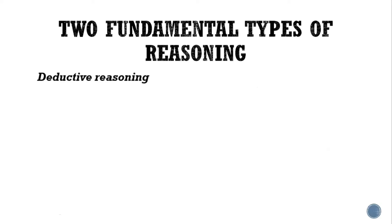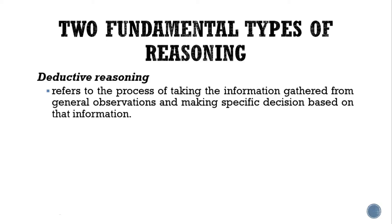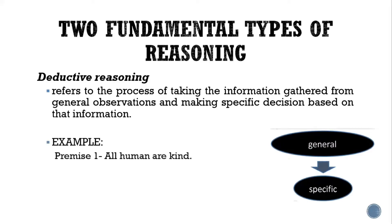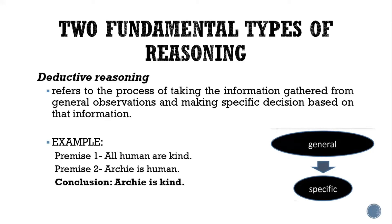On the other hand, deductive reasoning refers to the process of taking information gathered from general observations and making specific decisions based on that information. In deductive reasoning, we go from general to specific. Example — premise one: all humans are kind. Premise two: Archie is a human. Conclusion: Archie is kind.